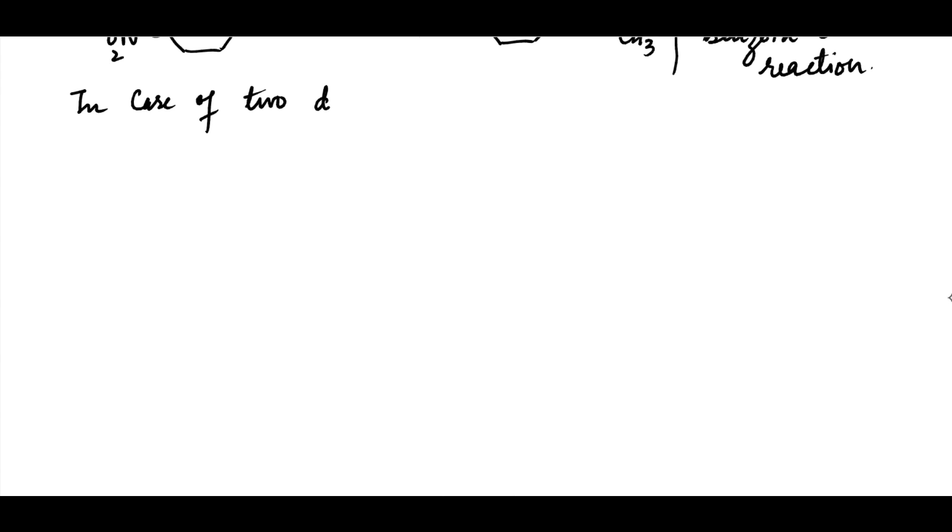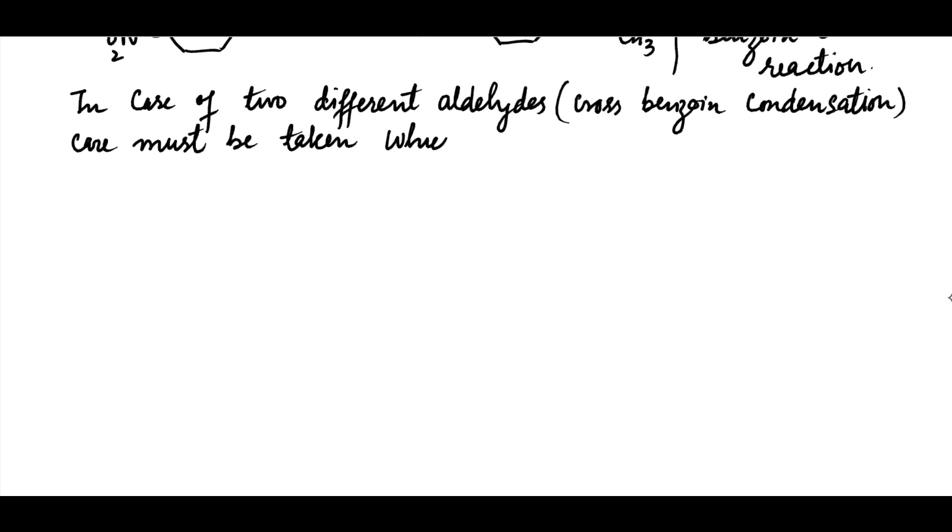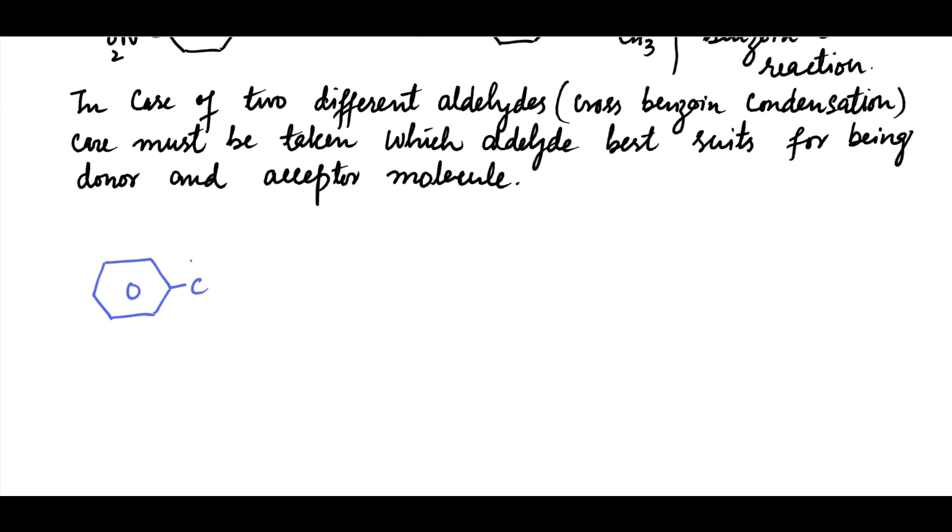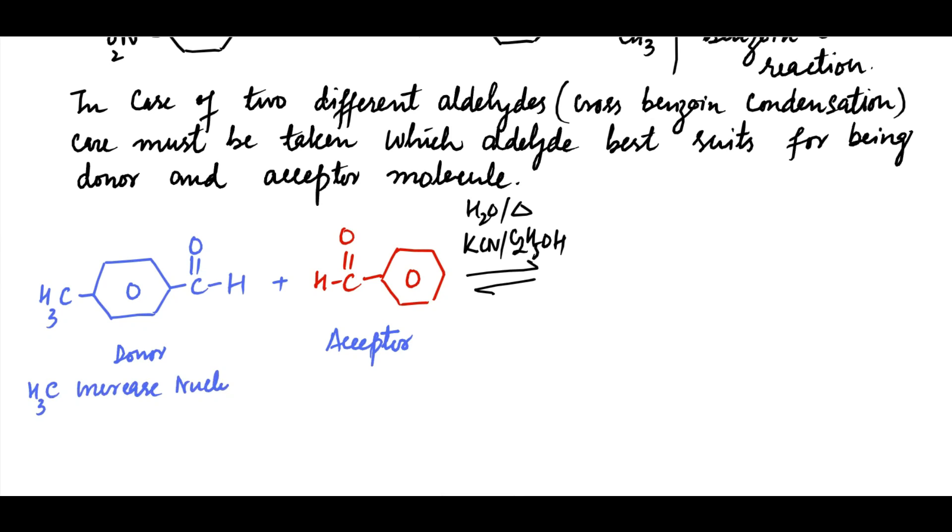In the case of cross-benzoin condensation of two different aldehydes, care must be taken as to which aldehyde best suits for being donor and which suits as acceptor molecule. Consider the cross-condensation between para-methylbenzaldehyde and benzaldehyde. The former suits as donor and latter as acceptor, because electron donating methyl group at para-position will enhance the nucleophilicity of carbanion. Notice that carbonyl in the donor is retained and changed to hydroxyl in the acceptor side.